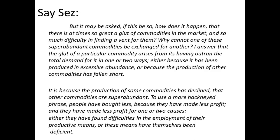Say says: 'But it may be asked, if this be so, how does it happen that there is at times so great a glut of commodities in the market and so much difficulty in finding an vent for them?' In other words, he's saying sometimes we do see a glut of commodities — a surplus across the economy — and that would entail unemployment, because if businesses build up surplus, they don't need to keep producing the good, so they ratchet down their use of inputs: land, labor, and capital. Why is it hard for businesses to sell their goods? That's also what's happening in a recession.